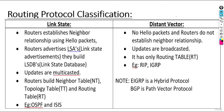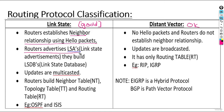Routing protocols can be classified in two ways. The first method is link state versus distance vector. Link state is a good routing protocol; distance vector is an okay routing protocol — good is better than okay. Link state is good because routers establish neighbor relationships using hello packets. For example, OSPF on an Ethernet segment sends a hello every 10 seconds. Routers do not advertise routing updates; instead they advertise link state advertisements.